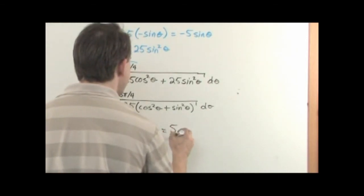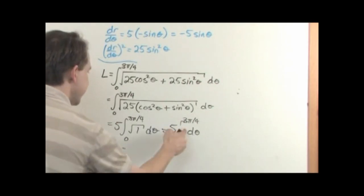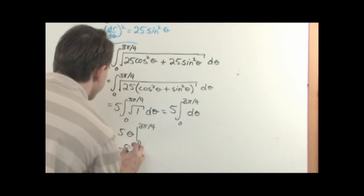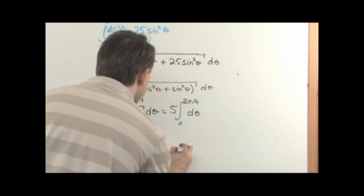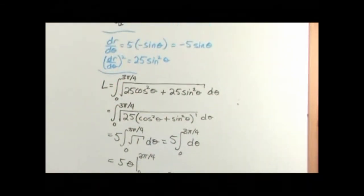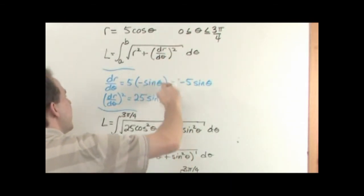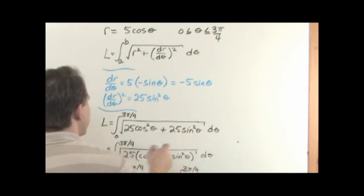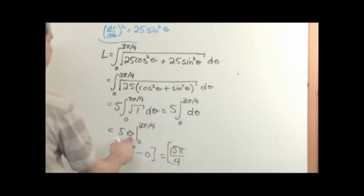Now, cos²θ + sin²θ should look familiar — that's always equal to 1 by the Pythagorean identity. So what I have left under the square root is just 1, and the integral becomes very simple: 5 times the integral from 0 to 3π/4 of d theta. That equals 5 times theta evaluated from 0 to 3π/4, which is 5 times (3π/4 − 0). Finally, 5 times 3 is 15, so the answer is 15π/4.